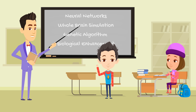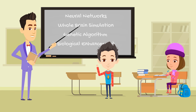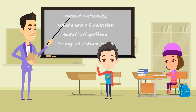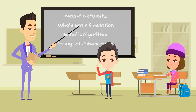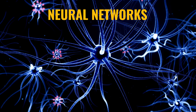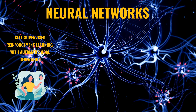Thank you, Daddy, for explaining the requirements to build an intelligent agent. But what technology can we use to create an AGI? The truth is that we are not there yet and we may discover more unknown unknowns on the way. However, there are four potentially promising approaches we can take to build an AGI: neural networks, whole brain simulation, genetic algorithms, or biological enhancements.